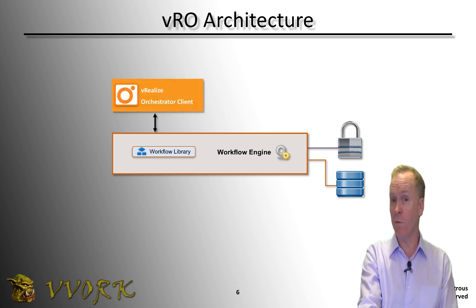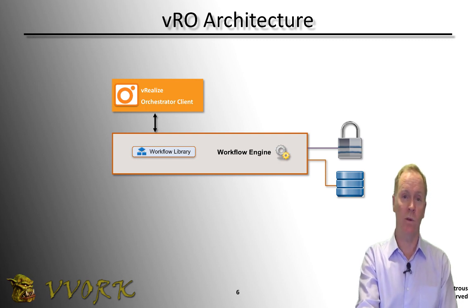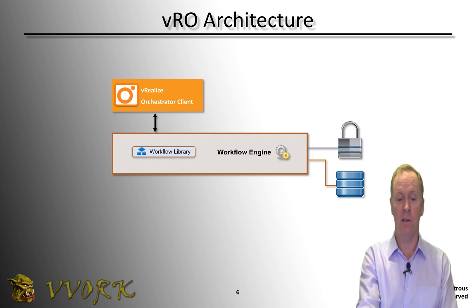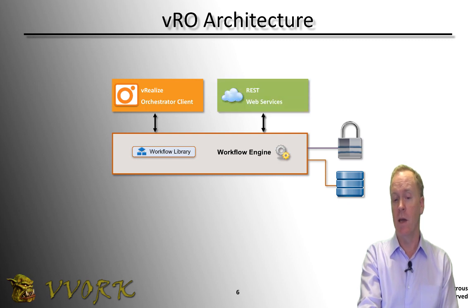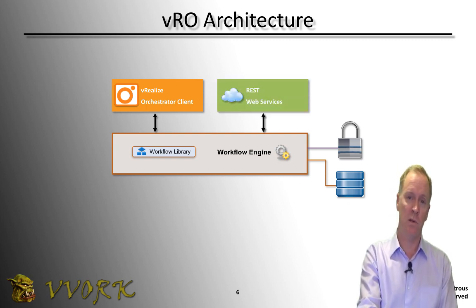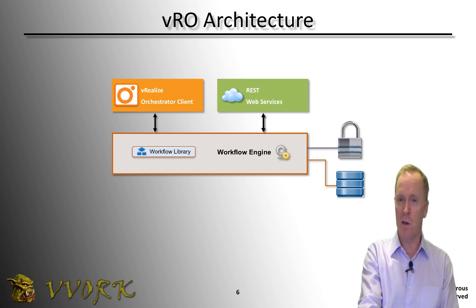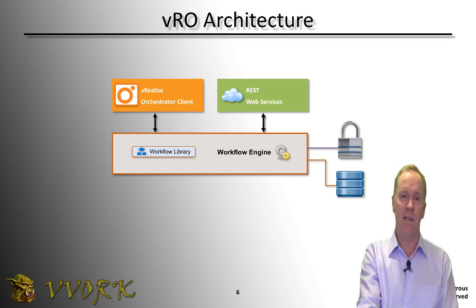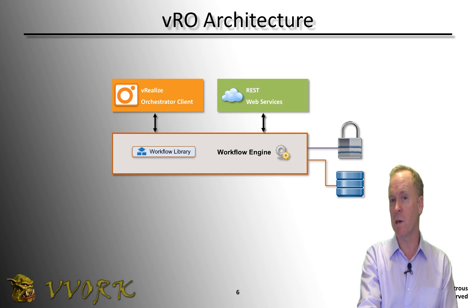In order to create, run, debug, or manage workflows, VMware provides a tool called the vRealize Orchestrator Client — I'll show you how to use that later in this video series. Alternatively, instead of running workflows through the Orchestrator client, Orchestrator provides a REST server API, which essentially means any tool or programming language outside of Orchestrator can kick off Orchestrator workflows.